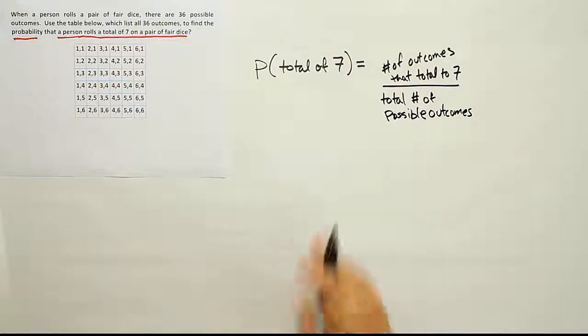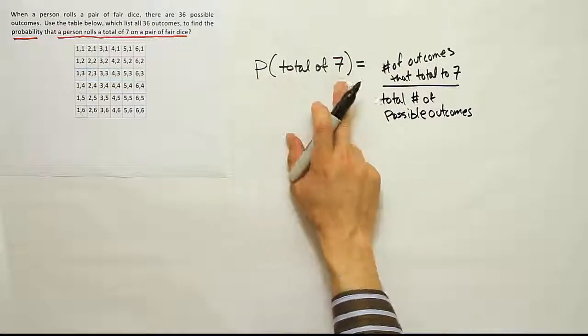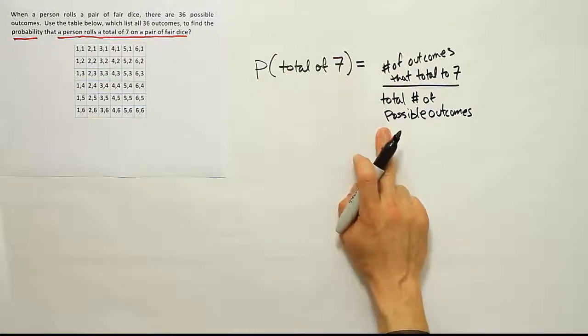All right, and that's basic probability, right? It's always number of whatever you have in here divided by the total. Okay, so let's count up in that grid system how many times we see a total of 7.